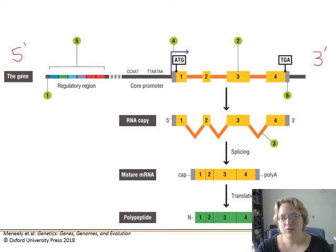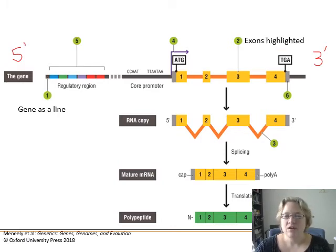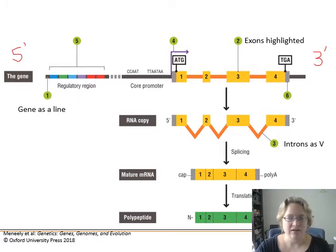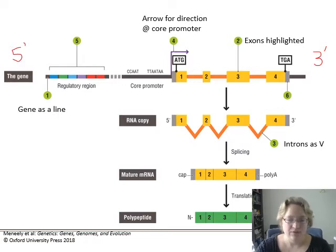Before we go further, let's talk about how to visually represent a gene — especially how your book does it. We look at the gene as a line representing the double-stranded piece of DNA. We have exons and introns: the exons are highlighted, and the introns are shown as a V that gets pinched out. Generally, we'll have an arrow at the core promoter showing where the gene starts and the direction it goes.